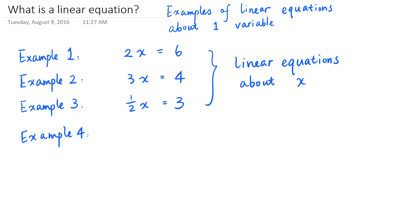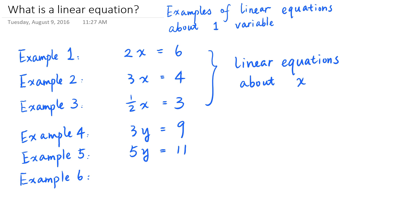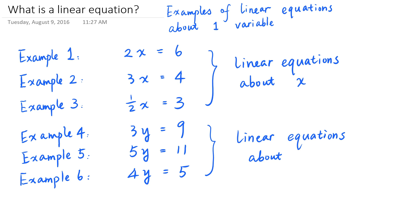Of course, you can use different variable names. So for example, 3 times y is equal to 9 is a linear equation about y. So is 5 times y is equal to 11, or 4 times y is equal to 5. These are all linear equations about the variable y.